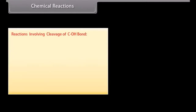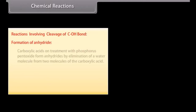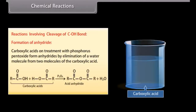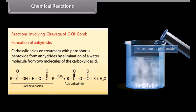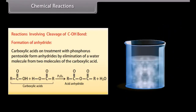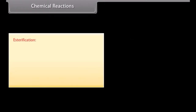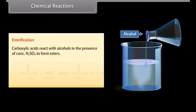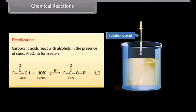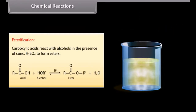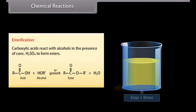Reactions involving cleavage of C-OH bond. Formation of anhydride: Carboxylic acids on treatment with phosphorus pentoxide form anhydrides by elimination of a water molecule from two molecules of the carboxylic acid. Esterification: Carboxylic acids react with alcohols in the presence of concentrated sulfuric acid to form esters.